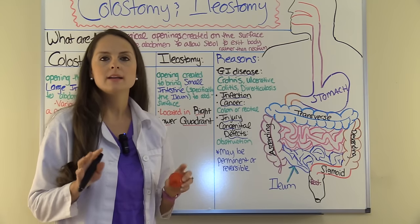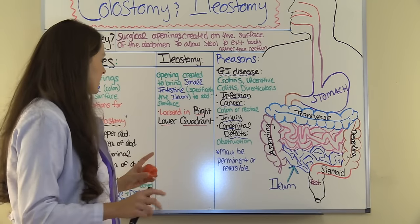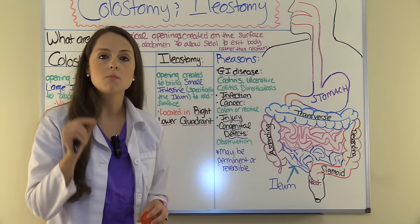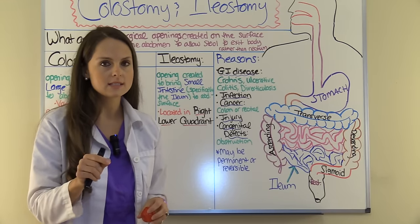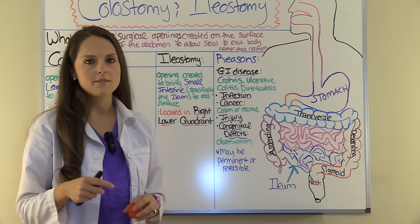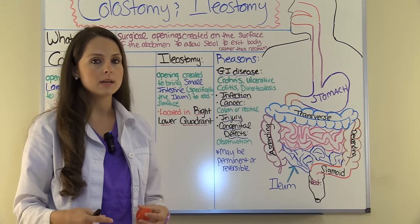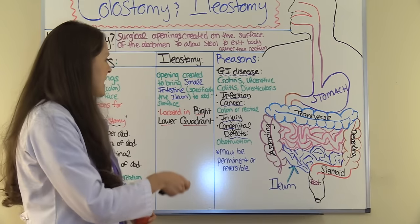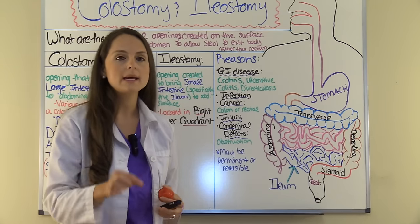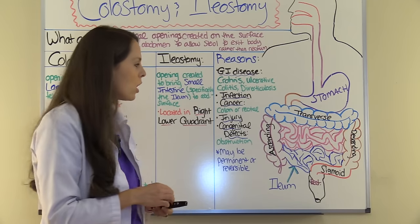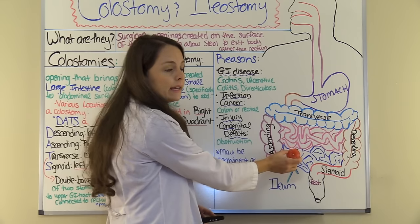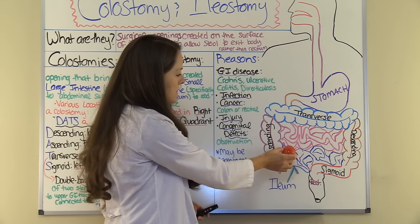Now let's talk about an ileostomy. An ileostomy is a surgical opening that brings the small intestines — specifically the ileum — to the surface of the abdomen so stool can be excreted. An ileostomy is going to be located in the right lower quadrant of the abdomen.